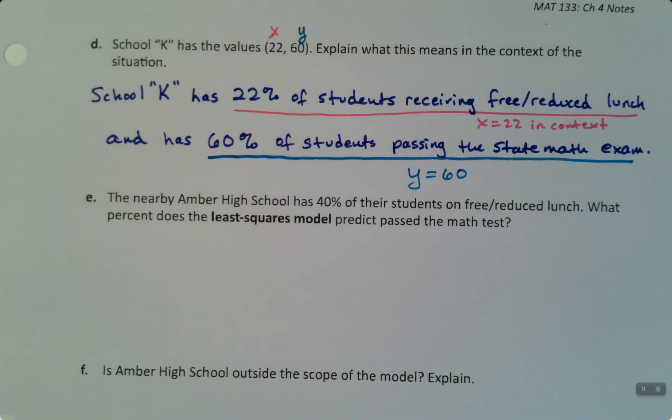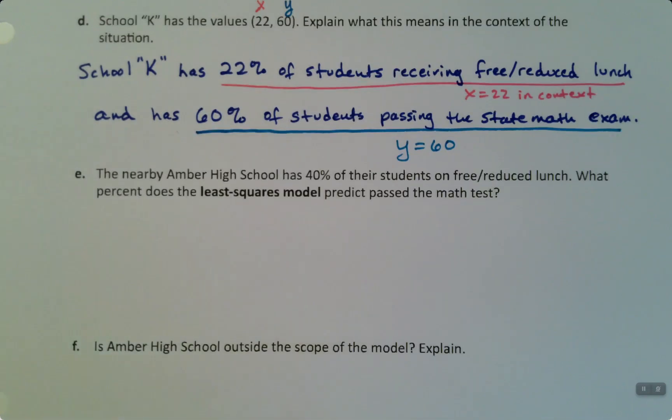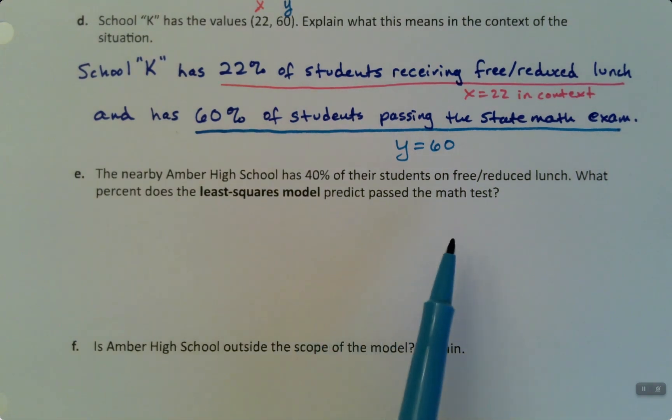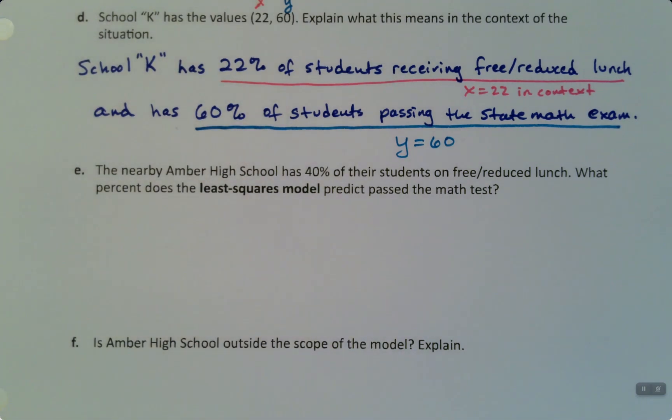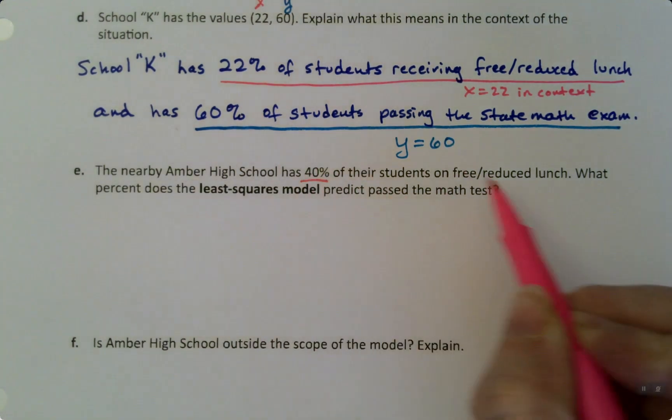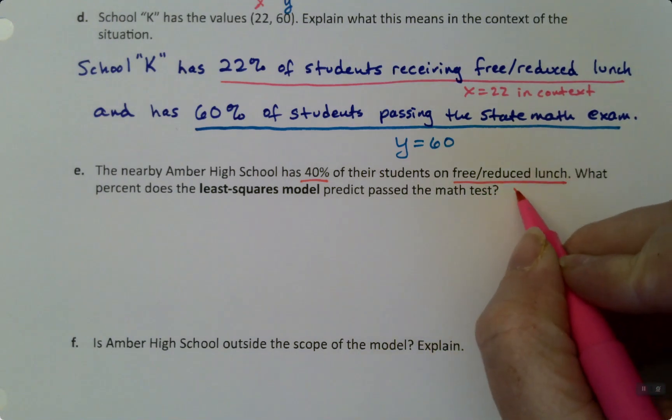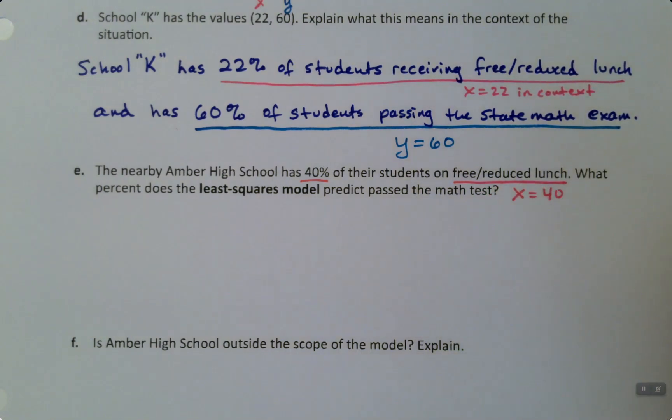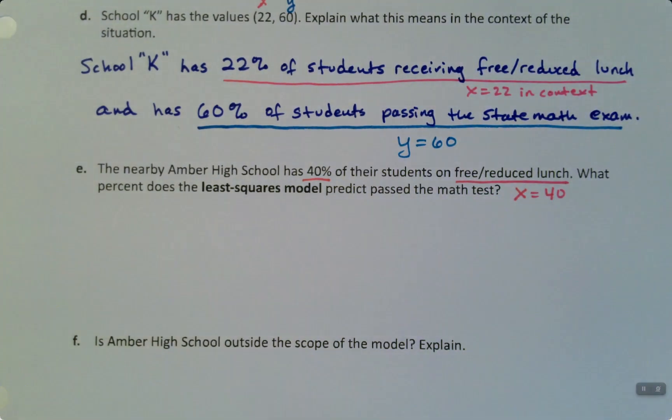Alright. Now, Amber High School, nearby Amber High School, has 40 percent of their students on free reduced lunch. And we need to explain what percent does the least squares regression model predict passed the math test? Okay. Well, if you read it, you can see it's saying Amber High School had 40 percent on free reduced lunch. 40 percent free reduced lunch. That's x. So and it's 40. It's not 0.40.